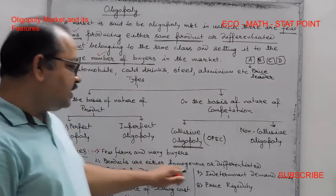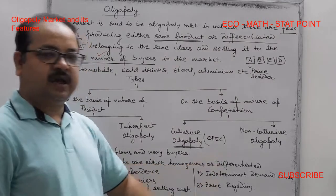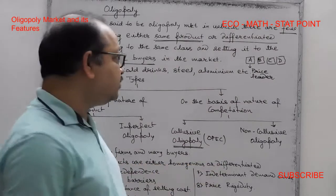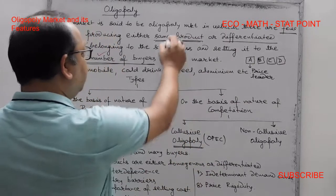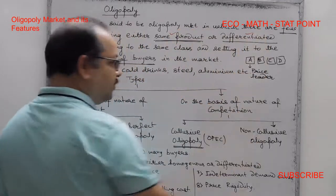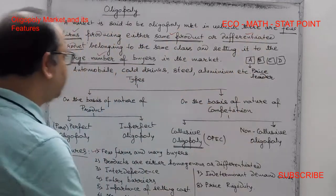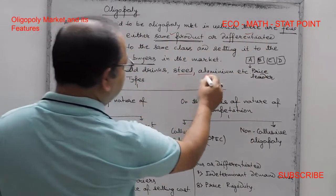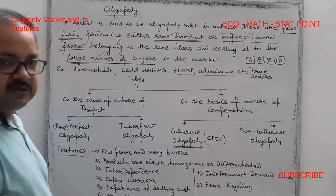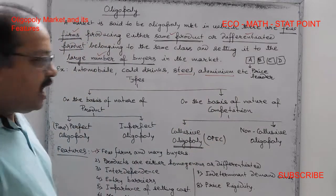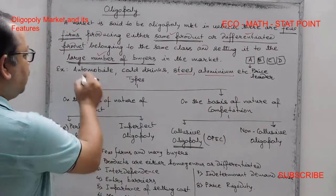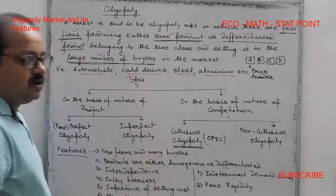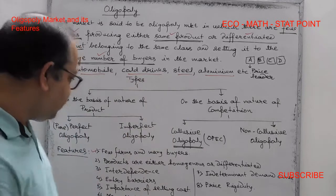The second feature is that products are either homogeneous or differentiated. In the steel and aluminum markets, firms produce the same homogeneous product. In the automobile market, firms produce differentiated products.